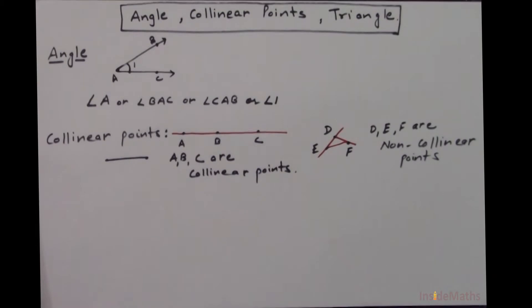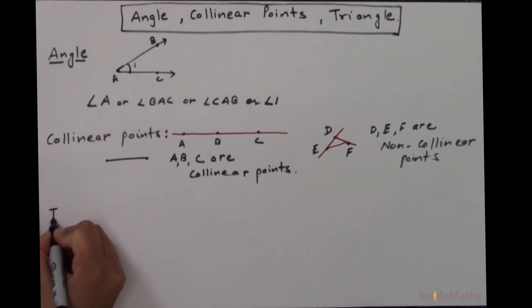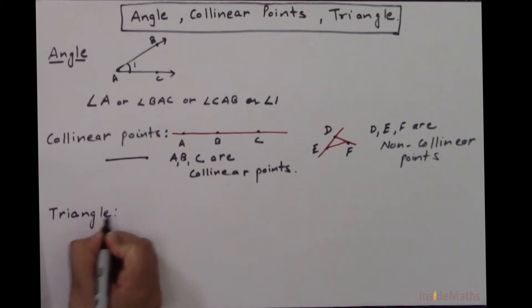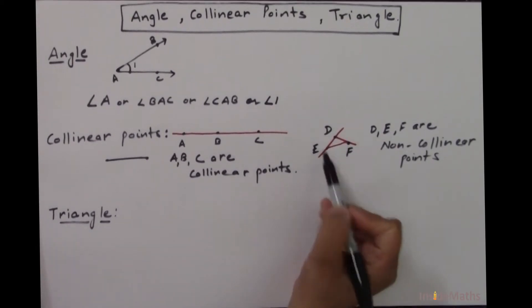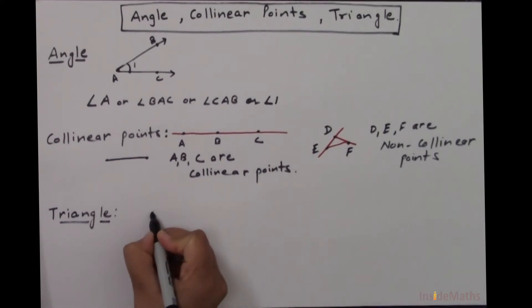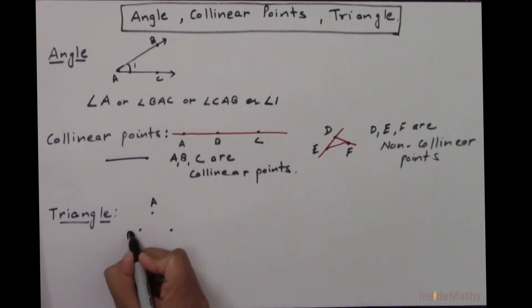Now our next definition is what's a triangle. If I join any three non-collinear points, you can see it over here. Let's take three non-collinear points A, B, C. If I join these three points I'll get a triangle.